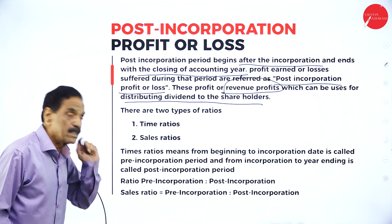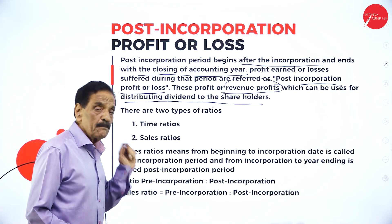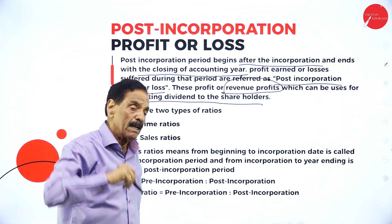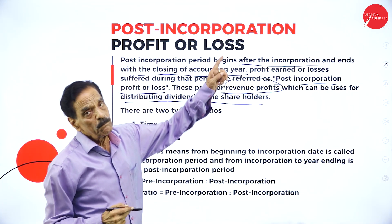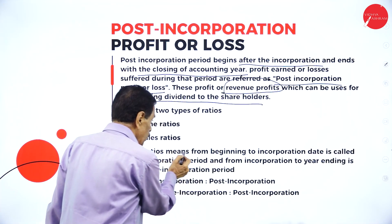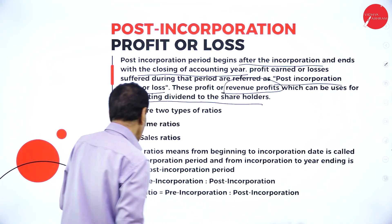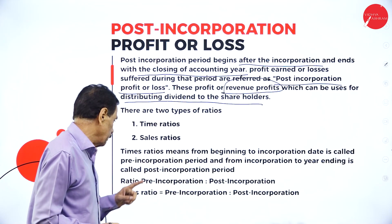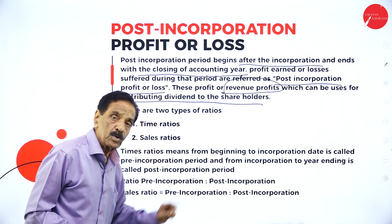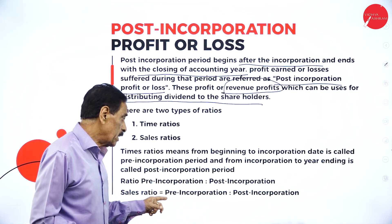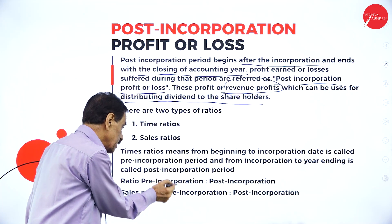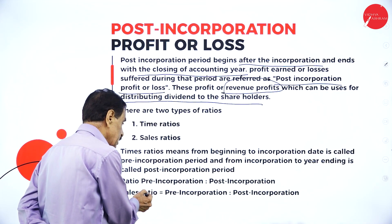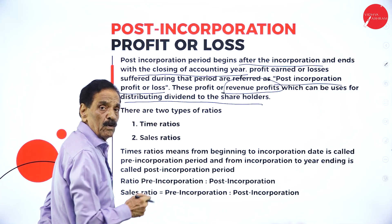There are two types of ratios: time ratio and sales ratio. Time ratio: from the beginning to the pre-incorporation period is one portion; from pre-incorporation to year ending is the post-incorporation period. Sales ratio: pre-incorporation sales to post-incorporation sales. Time ratio is used for distributing expenses; sales ratio is used for distributing profit.